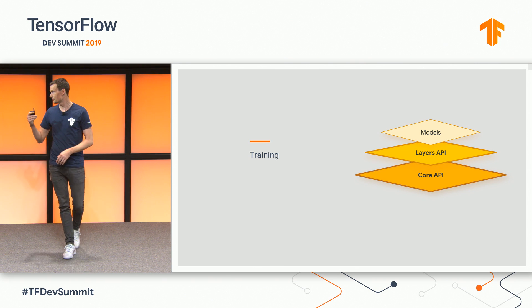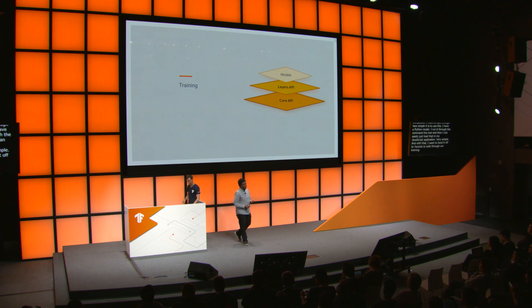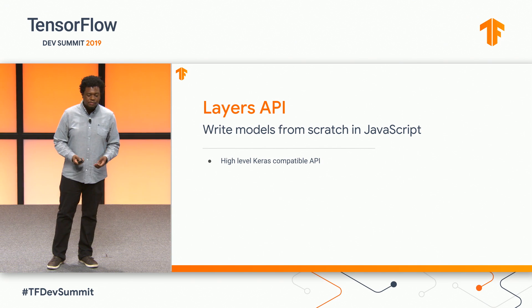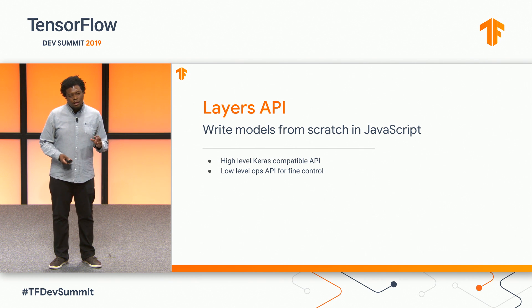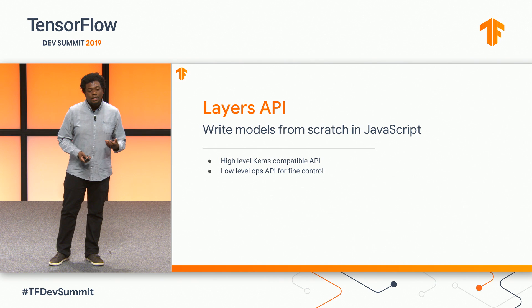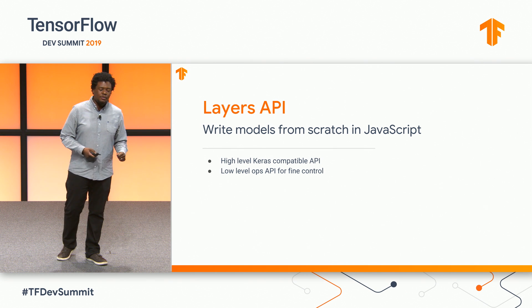With that, I want to hand it off to Yannick to walk through our training APIs. Thanks, Nick. So in addition to working with pre-trained models, TensorFlow.js also allows you to author and train models directly in JavaScript, both in the browser and in Node. The primary tool for this is the Layers API, which is a Keras-compatible API for authoring models. There's also a lower-level op-driven API if you need fine control over model architecture or execution. The main takeaway is that it's pretty similar to using Keras in Python, but follows JavaScript conventions.